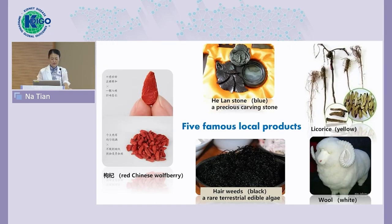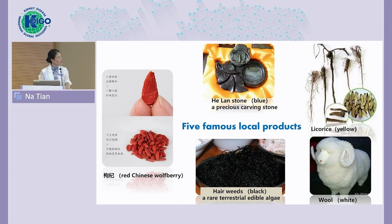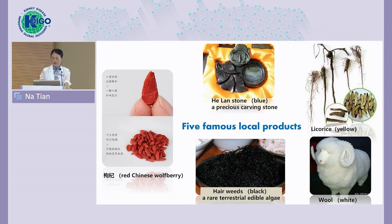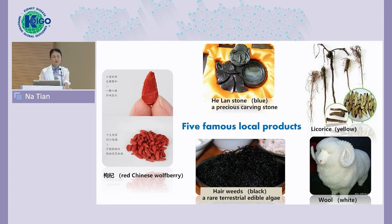We have five famous local products: the red is Chinese wolfberry, very commonly used in soup making; the blue is the Helan stone, a very precious carving stone; the black is hairweed, a rare edible algae; the yellow is astragalus, used for medication to relieve cough; and the white is wool — we have very high quality wool.